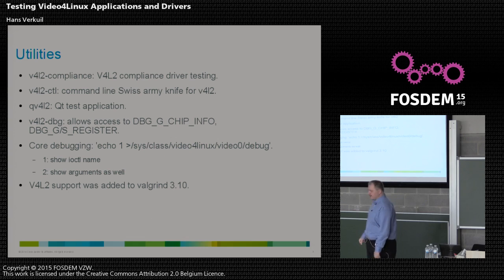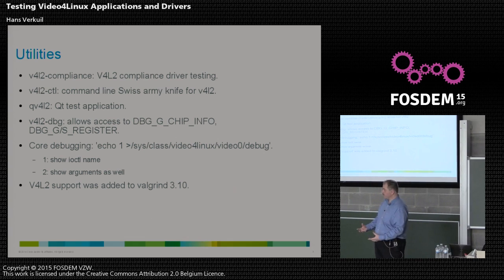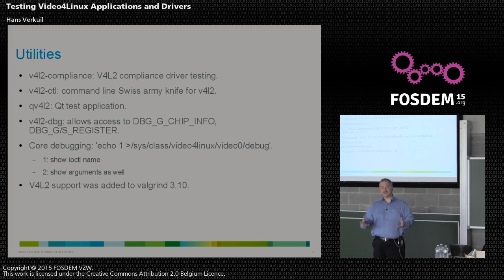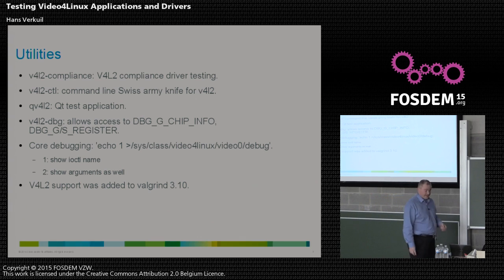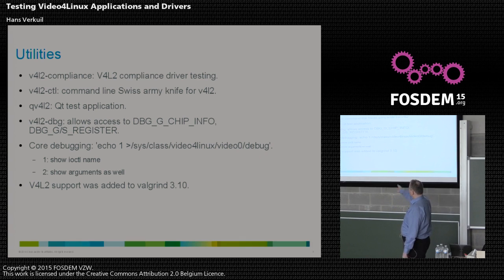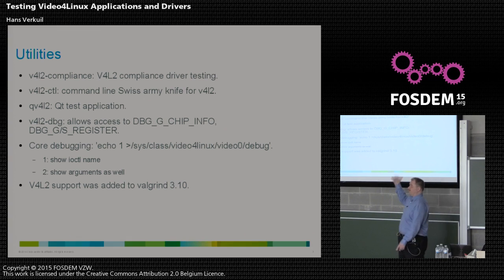Last year we added support to Valgrind for V4L2, so Valgrind now knows about all the structures you pass in IOCTLs. Many structures have reserved fields that the application is supposed to set to zero — we never had a way to check that. With Valgrind, if you run it over your application, it will tell you that you forgot to initialize something to zero. We try to keep that up to date — it's currently up to date to kernel 3.19, and a patch for 3.20 is already made.